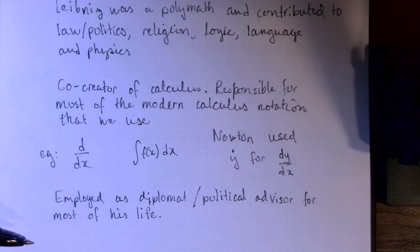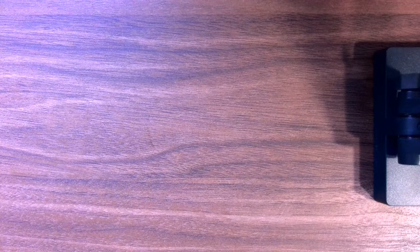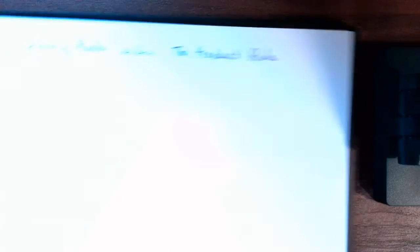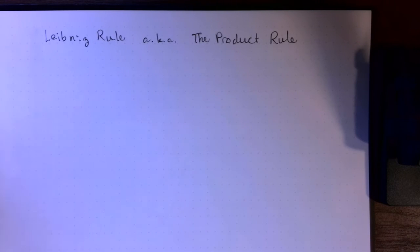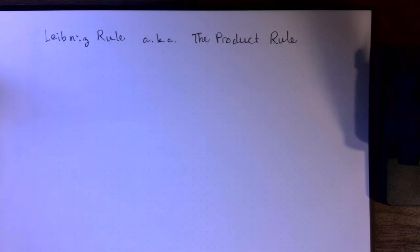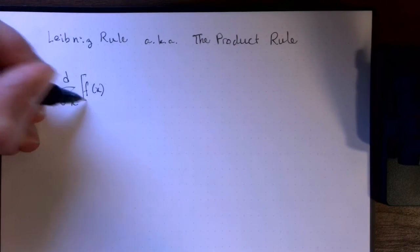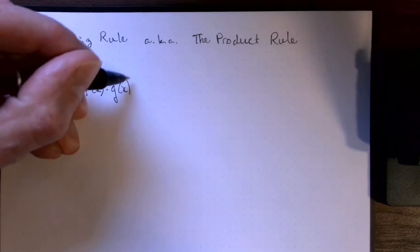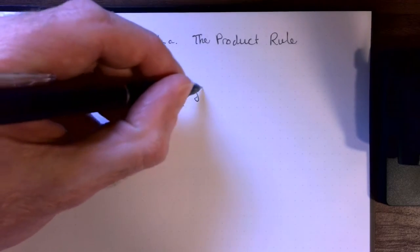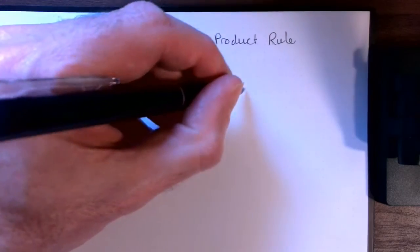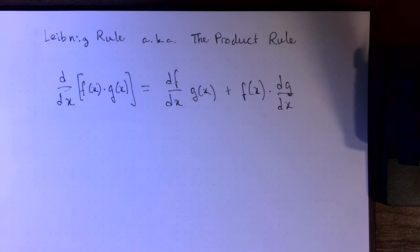So I suppose the most famous thing that Leibniz is known for is the Leibniz rule, also known as the product rule. Naturally every student of calculus knows what this is. So if you differentiate a product of two functions, you do not get the product of the derivatives. You get the derivative of the first function times the second function by itself, plus the first function by itself times the derivative of the second function.